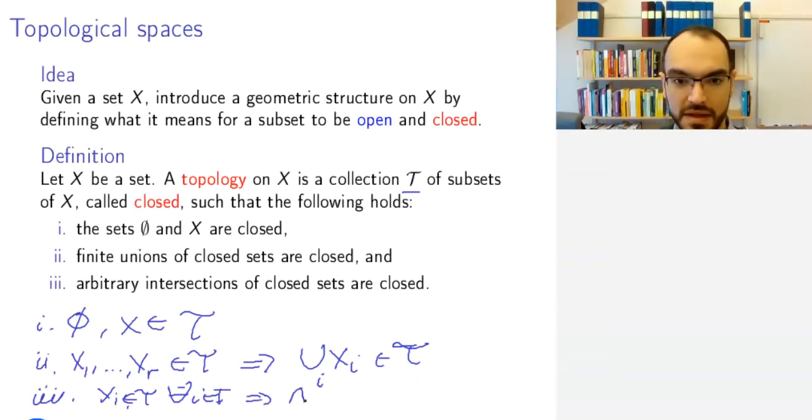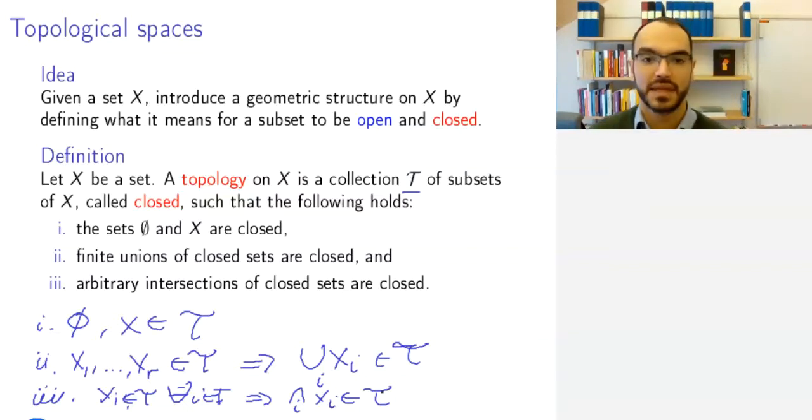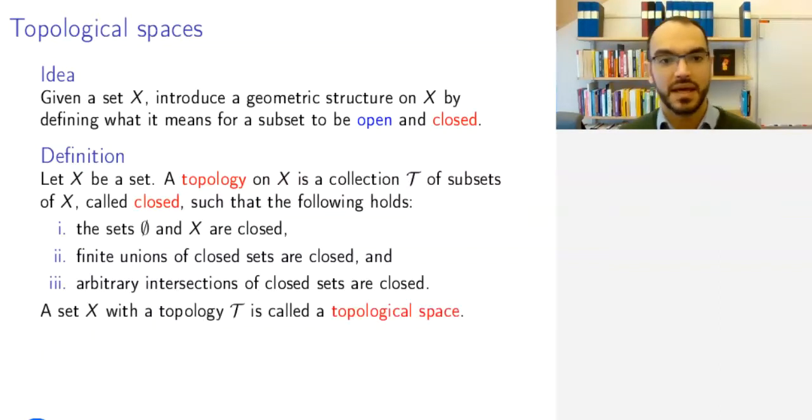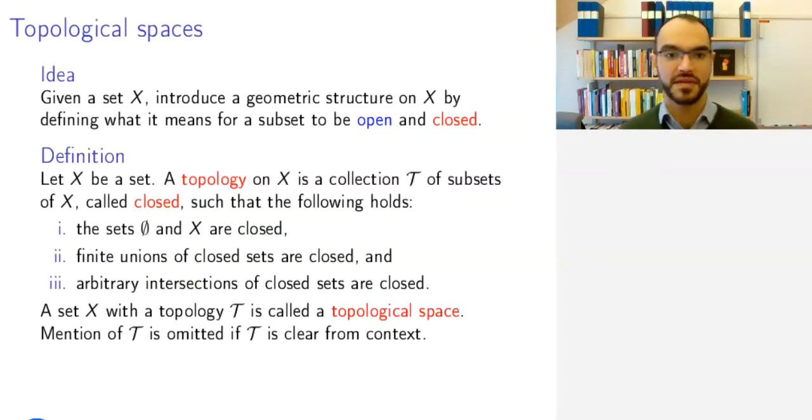Third, if subsets Xᵢ, where i is any index set, belong to T, then the intersection of all Xᵢ belongs to T. These are, if you think about it, the properties you would expect from closed sets on, say, the real line. A set X with a topology T, so a collection of sets that you declare as closed, is called a topological space. If the topology is clear from context, you just say that X is a topological space without explicitly mentioning T. Now what is an open set?